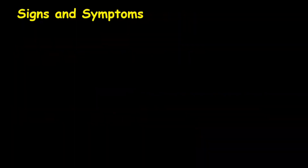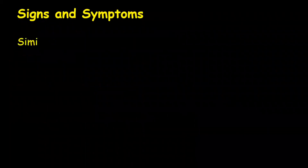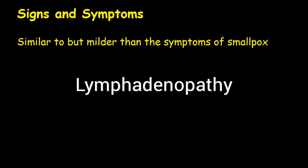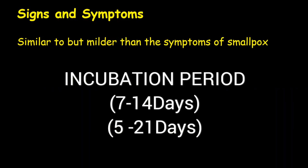In humans, monkeypox is similar but milder than the symptoms of smallpox. Monkeypox symptoms begin with fever, headache, muscle ache, and exhaustion. The main difference between smallpox and monkeypox is that monkeypox has lymphadenopathy while smallpox does not. The incubation period for monkeypox is 7 to 14 days, but it can also range from 5 to 21 days.